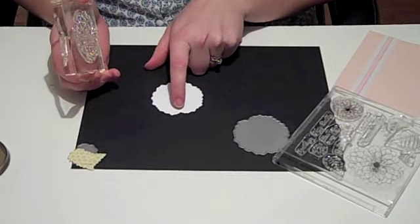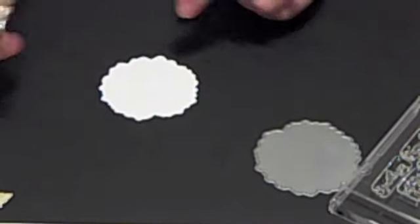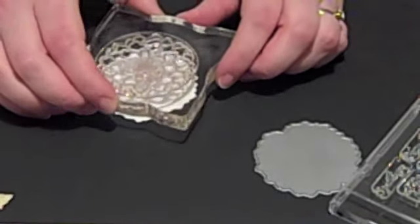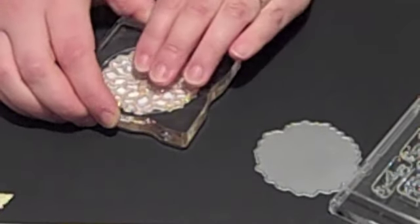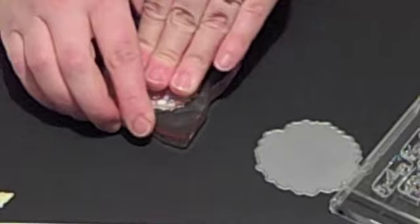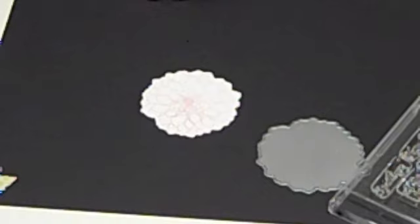And if you notice on this die, there's like a notch out of the side right here. And if you match up that notch with the notch in the flower, it gives you a good reference point to use when lining these up. And just stamp downward. Perfect every time.